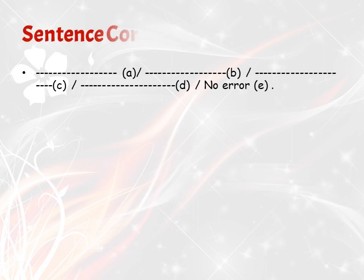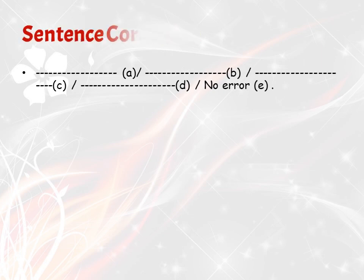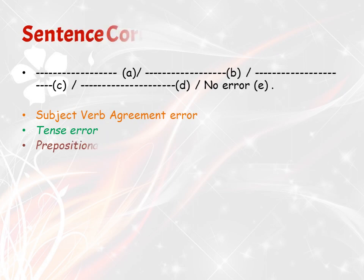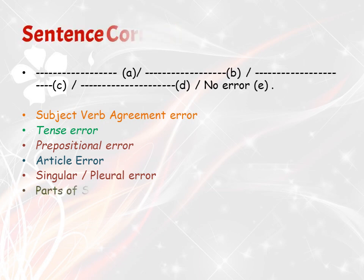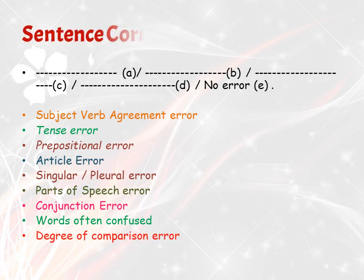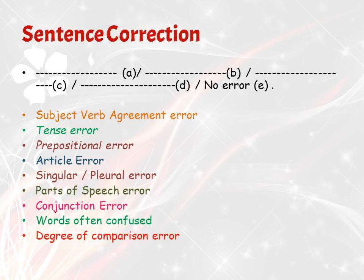To identify errors, you should know the rules of sentence correction or error detection. There may be errors in subject-verb agreement, tense, prepositions, articles, singular or plural nouns, parts of speech, conjunctions, words often confused, degrees of comparison, or possessive nouns. If you know these rules, it will be very easy to identify errors.